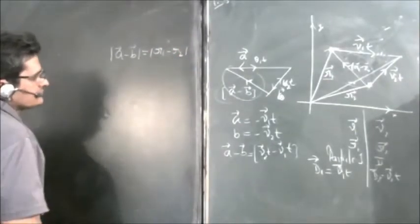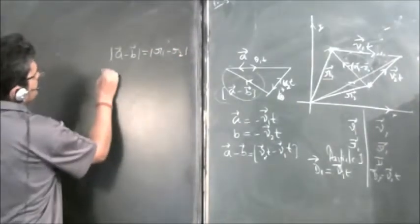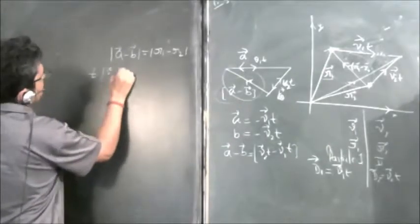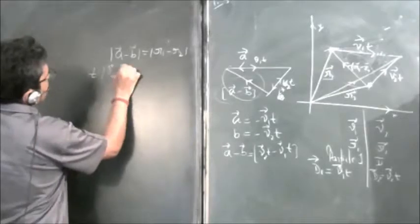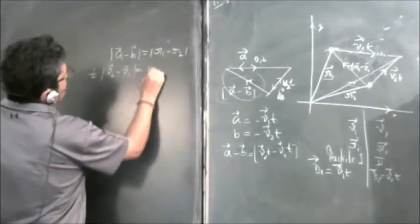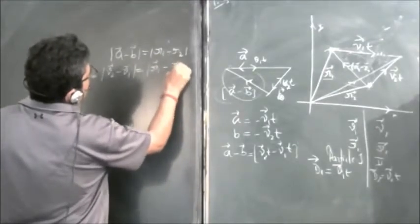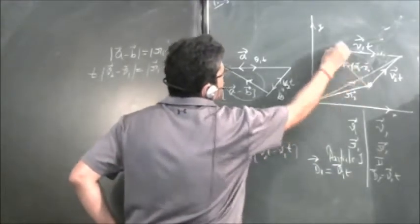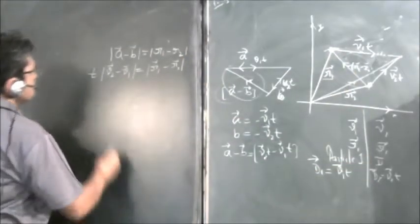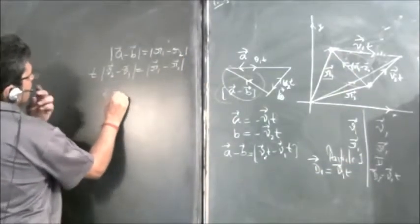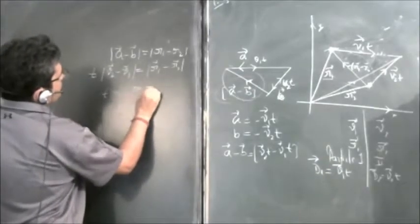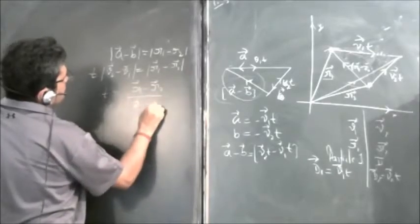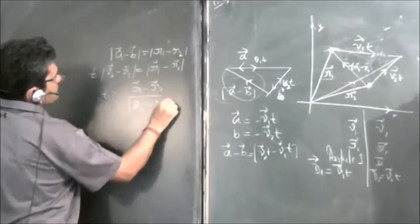We can equate and get the relationship: t times modulus of (v2 minus v1) vector equals modulus of r1 minus r2 vector. We take modulus because the distance is the same. So the value of t equals modulus of (r1 minus r2) divided by modulus of (v2 minus v1).